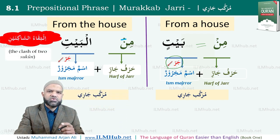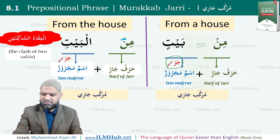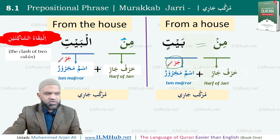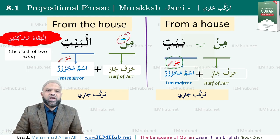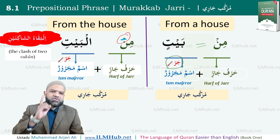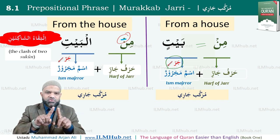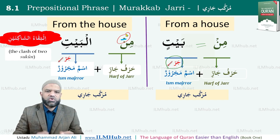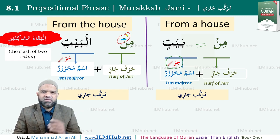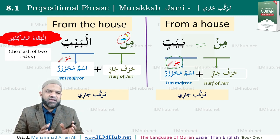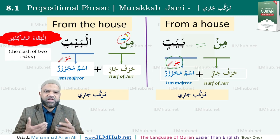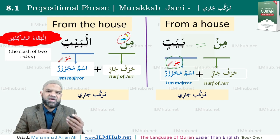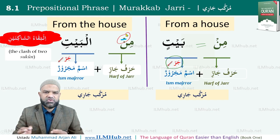An important point: مِن changes when it meets the definite article. You can see from a sukoon to a fatha — because in Arabic, when two sukoons meet you cannot read, so an additional helping vowel is added. Thus مِن becomes مِنَ before the definite article: مِنَ الْبَيْتِ, 'from the house'. Both examples are murakkab jari.